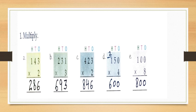Now D part: one hundred and fifty multiplied by four. First multiply the ones by four — that is zero into four is zero. Write zero under ones. Then multiply the tens by four — that is five into four is twenty. Write zero under tens and carry two hundred. Now multiply the hundreds by four — that is one into four is four. Add two carry, so four plus two is six. Write six under hundreds. So your answer will be six hundred.